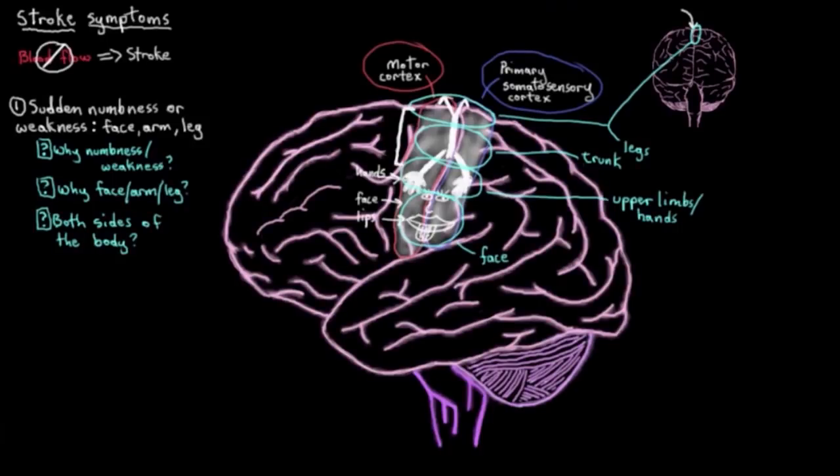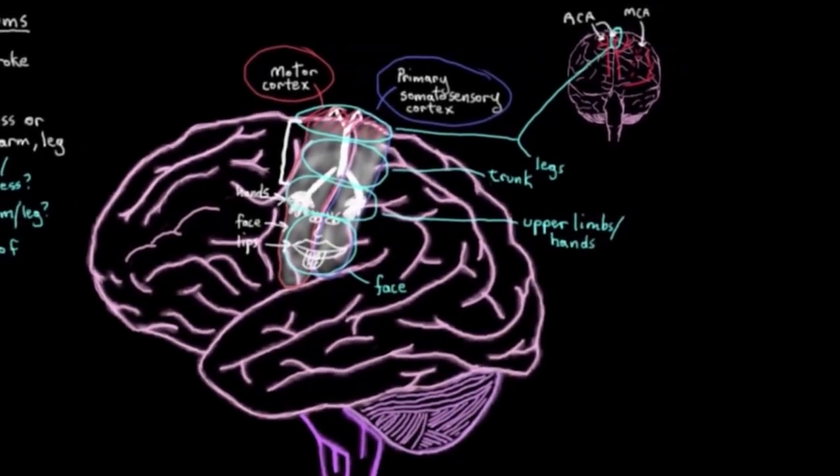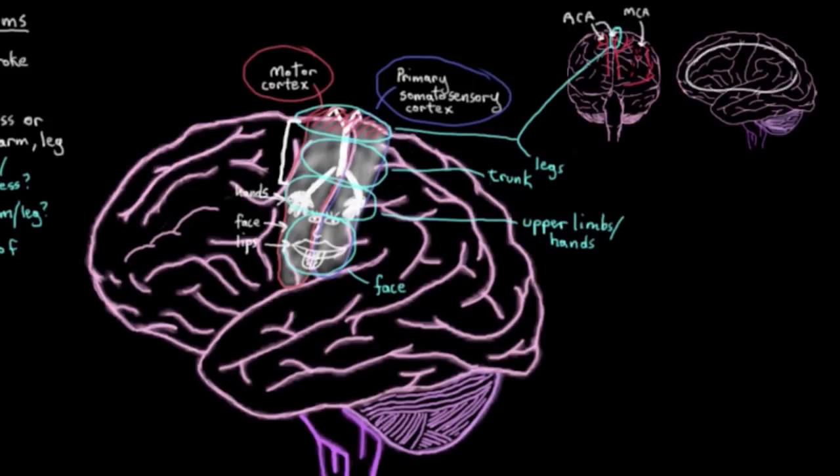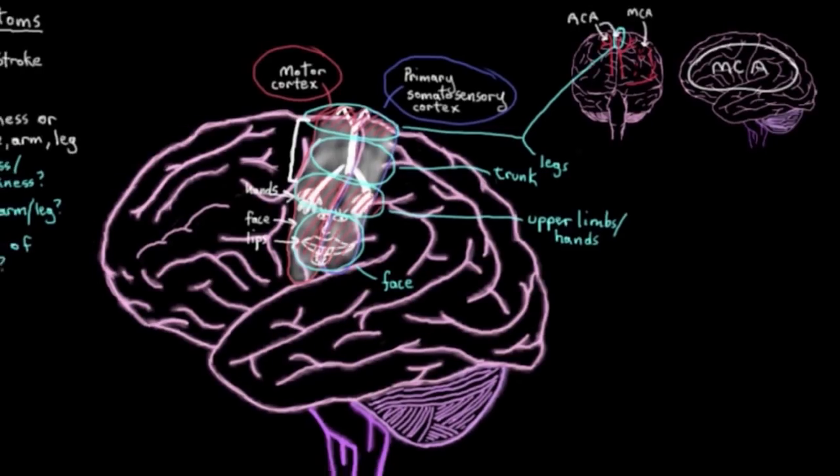So you can probably see where I'm going with this, but if you get some compromise of your anterior cerebral artery, your ACA, which supplies this part of your brain here, you'd get possible motor or sensory symptoms in your legs. Or if you get some compromise of your middle cerebral artery, your MCA, which supplies all of this area here, you'd end up with symptoms affecting your face and your upper limbs.